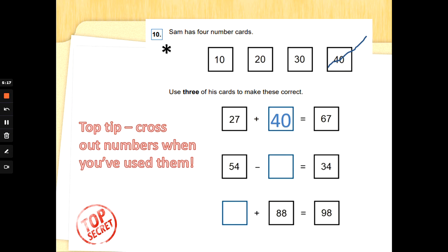Fifty-four take away something is thirty-four. I'm going to count backwards in tens to help me with this one. Fifty-four, forty-four, thirty-four. I've got two lots of ten up. Fifty-four take away twenty is thirty-four, because five tens take away two is three tens. I'm going to cross twenty out so I don't forget that I've used it. Something add eighty-eight equals ninety-eight. So I've got eight tens but I need nine tens. Eighty-eight, if I count in tens, eighty-eight, ninety-eight. It took me one ten, so the answer is ten. You've got to fill in every box to get the point for this question. Well done guys.